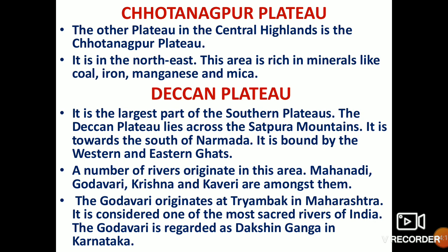A number of rivers originate in the Deccan Plateau, including the Mahanadi, Godavari, Krishna, and Kaveri. The Godavari originates at Triambhak in Maharashtra and is considered one of the most sacred rivers of India. It is also known as the Dakshin Ganga. These rivers flow from west to east and fall into the Bay of Bengal.